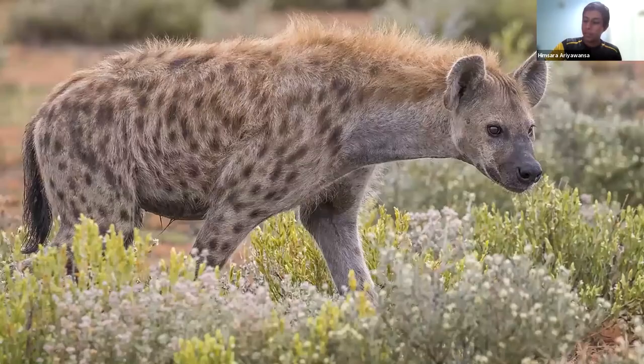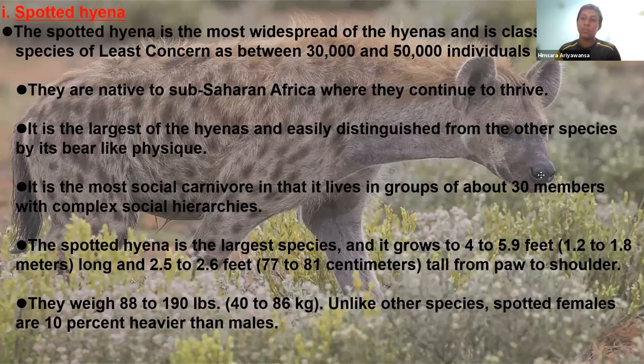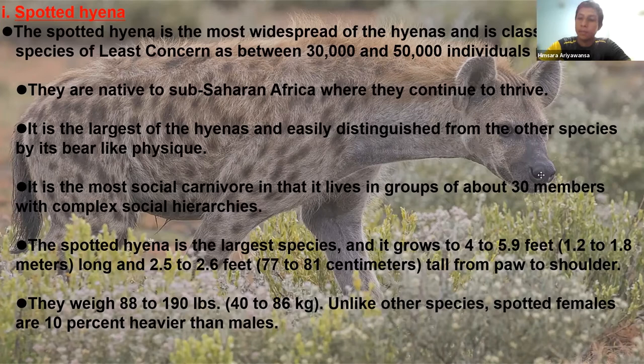The spotted hyena is the most widespread of the hyenas and is classified as a species of least concern, with between 30,000 and 40,000–50,000 individuals roaming in the wild. They are native to sub-Saharan Africa, where they continue to thrive. The main habitat of these hyenas is sub-Saharan Africa.